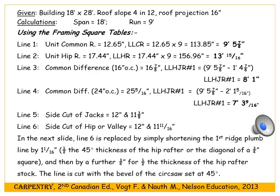For hip jack rafters, start with the common rafter length and reduce each time by the common difference. The framing square has two lines: one for 16-inch on-center spacing, one for 24-inch on-center. Line three gives a common difference of 16 and 7 eighths inches. The longest hip jack rafter would be 9 feet 5 and 7 eighths minus 1 foot 4 and 7 eighths, giving 8 feet 1 inch. Then keep subtracting 16 and 7 eighths inches for each successive jack.